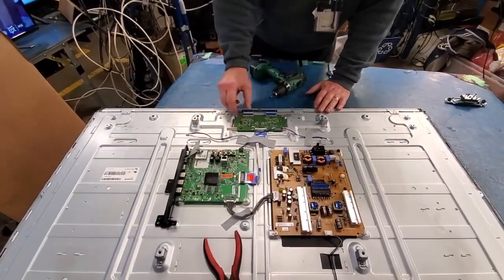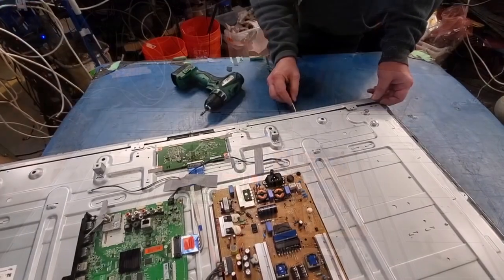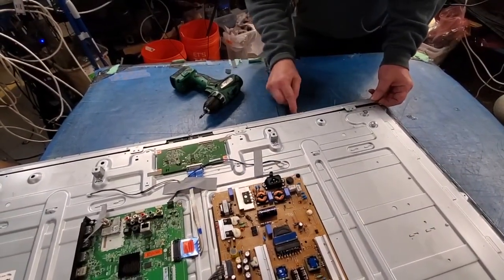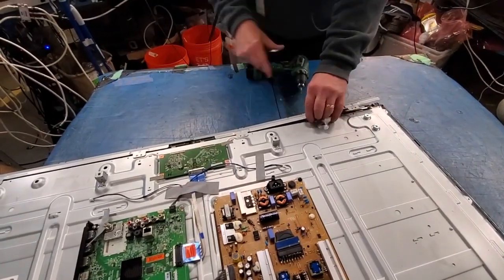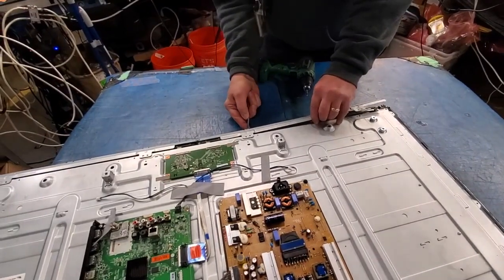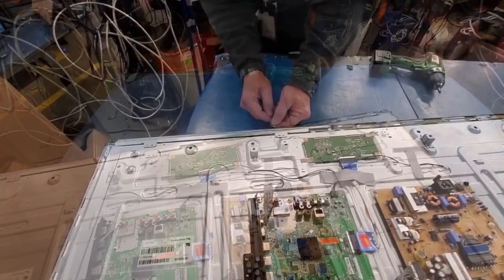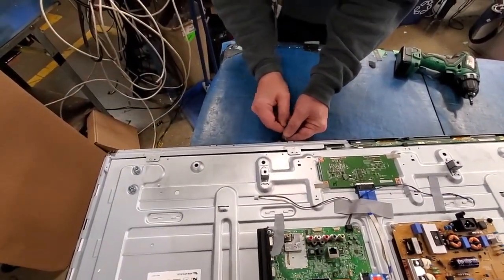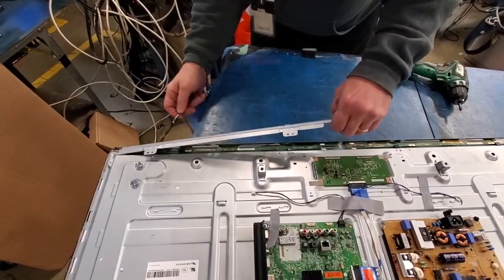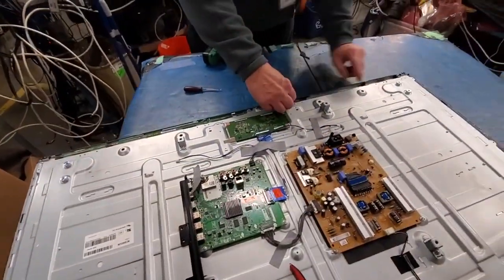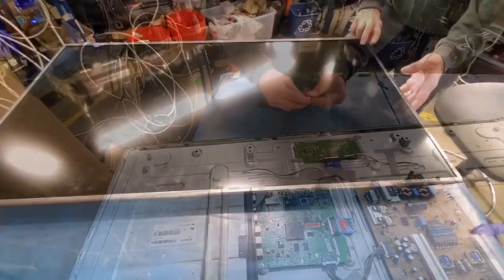Disconnect the ribbon cables from the T-Con board. Remove the metal shields over the scan drive boards. They may be wedged in there so use a tool gently to try and loosen them. Loosely remove the scan drive boards from the panel.